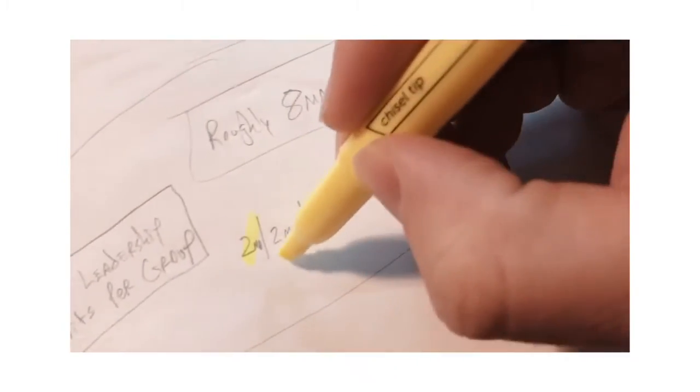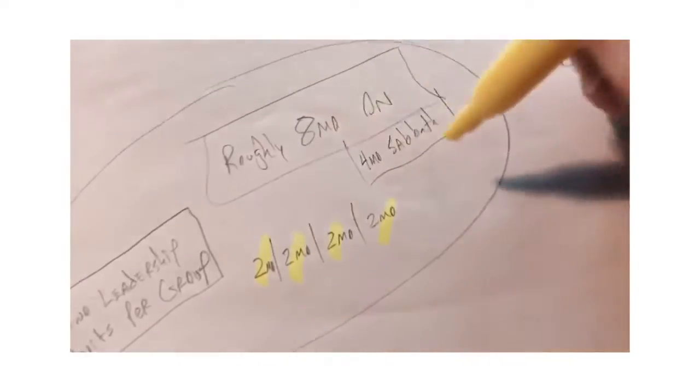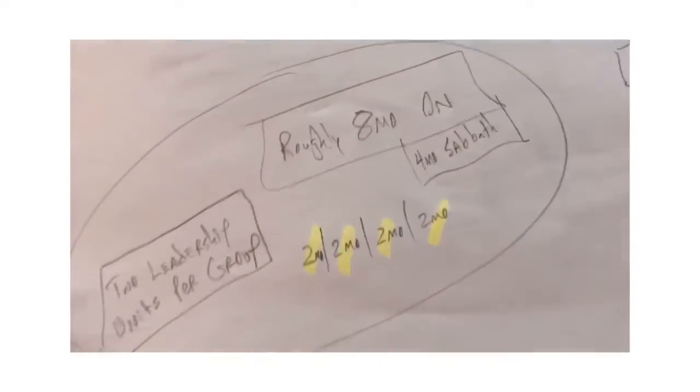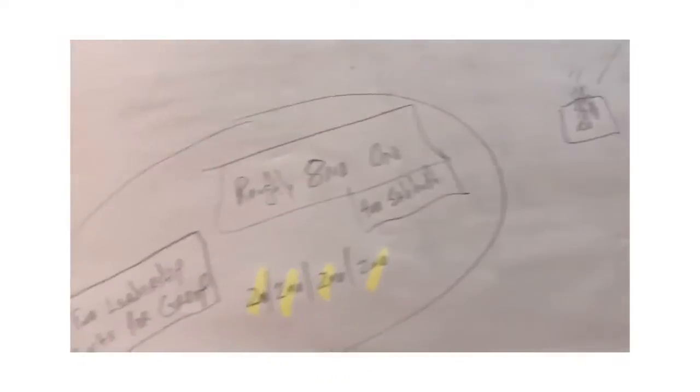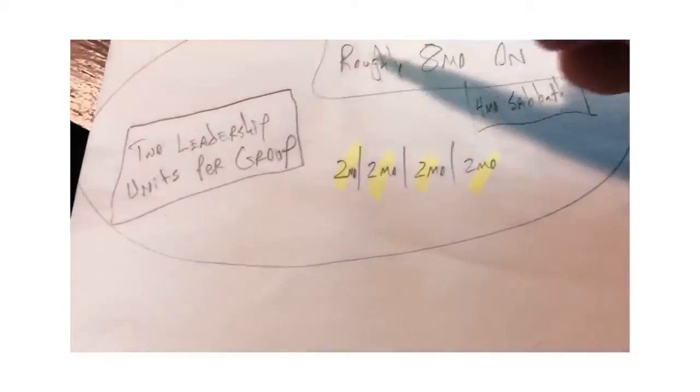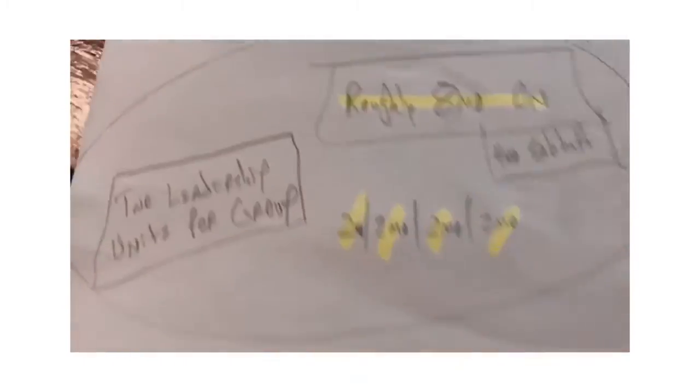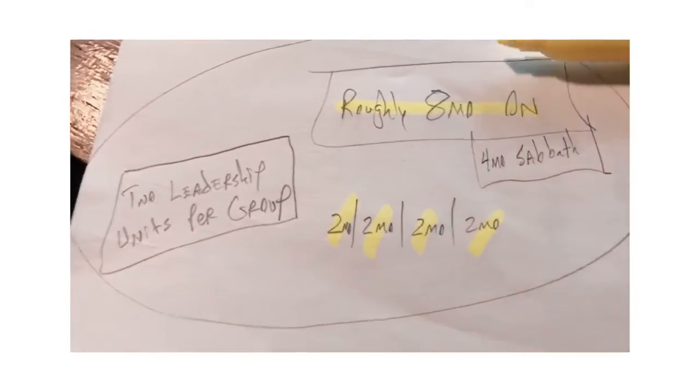So you can split that up going two months on, two months off, two months on, two months off, trading the leadership back and forth between each other so nobody gets burned out. Or you could go one month, one month, or you could go four months and then four months, however you choose to divvy it up. But you'll split up those eight months of gospel community leadership with another leadership unit.